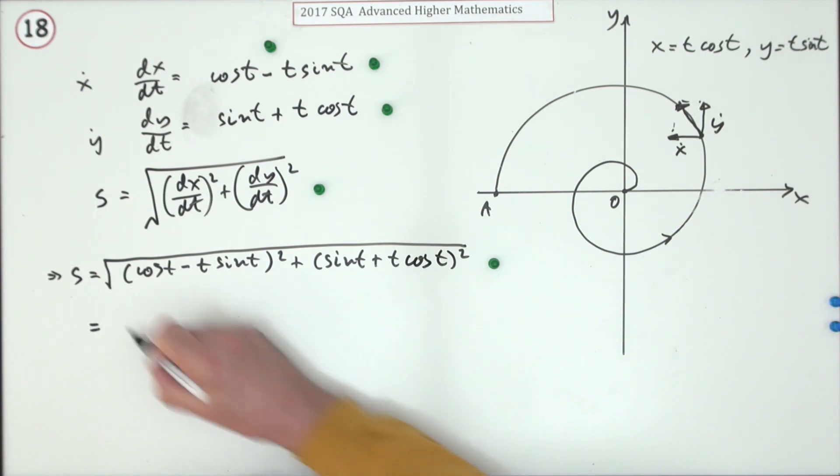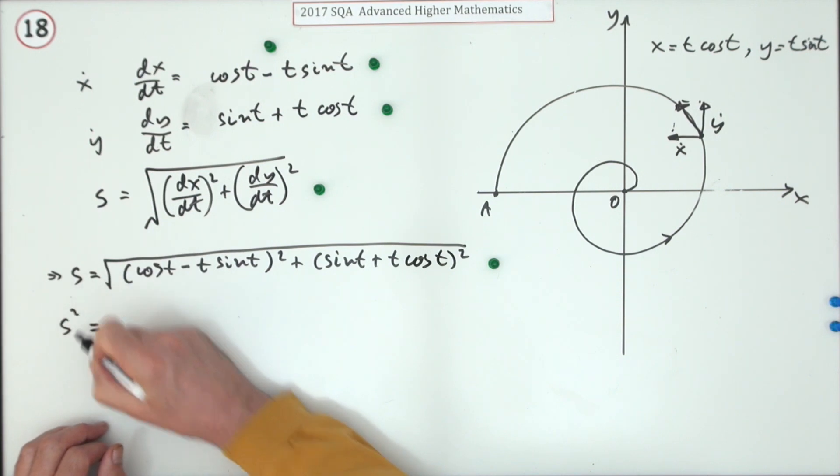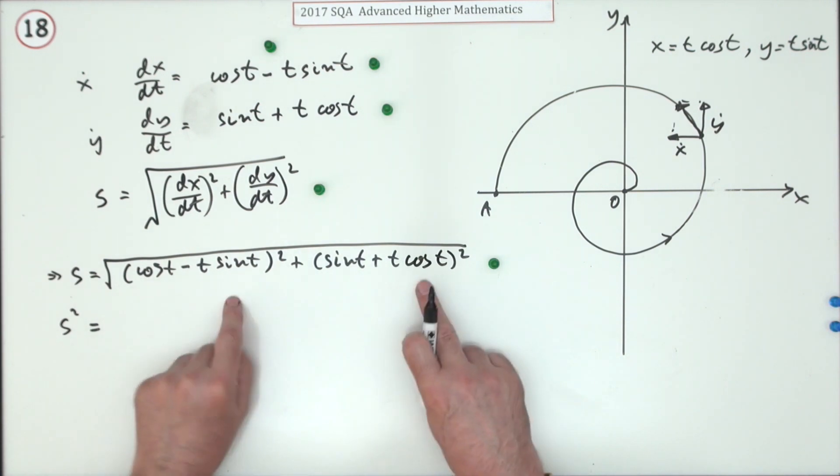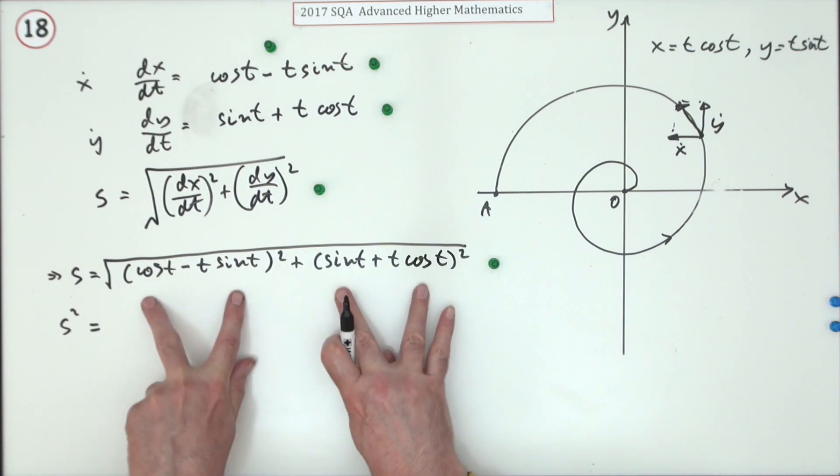Now what does that lot come to then? See, instead of putting this big square root, I could have avoided that by just putting s squared until I had it nice and neat. Then I can throw the square root back in. Well, what you can see with the pluses and minuses, what's going to happen is these two brackets here when you square them are going to produce very similar results with sin squares and cos squares.